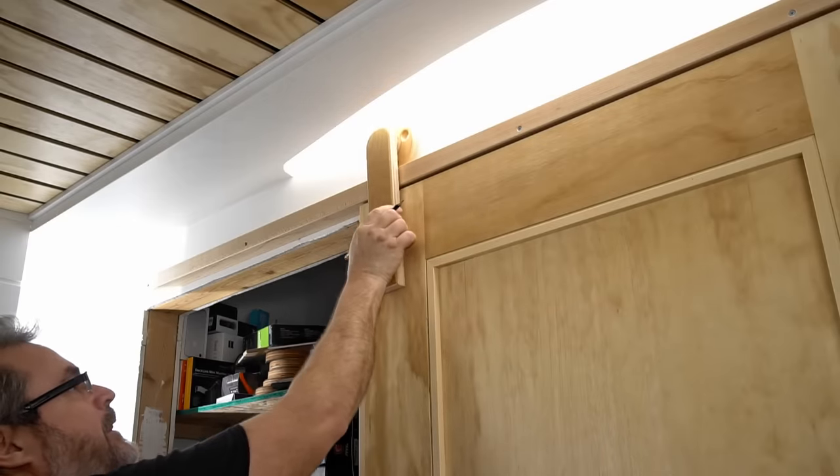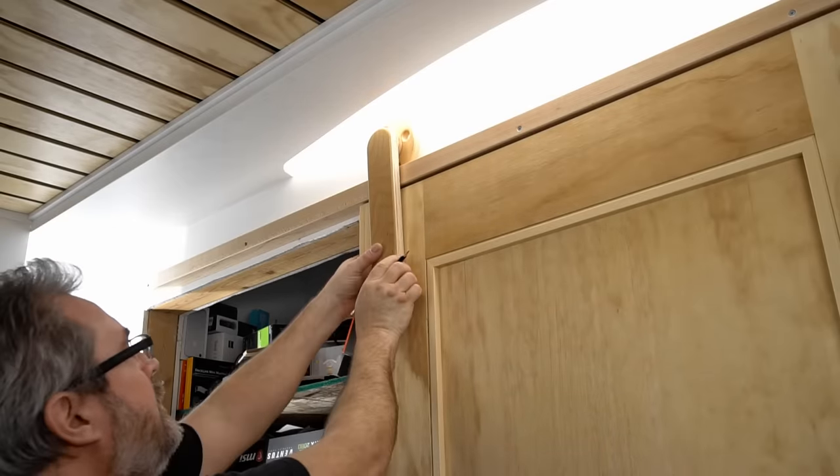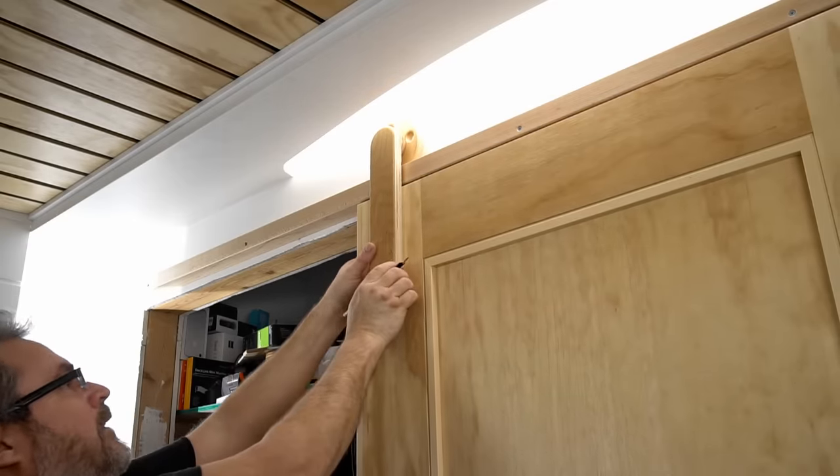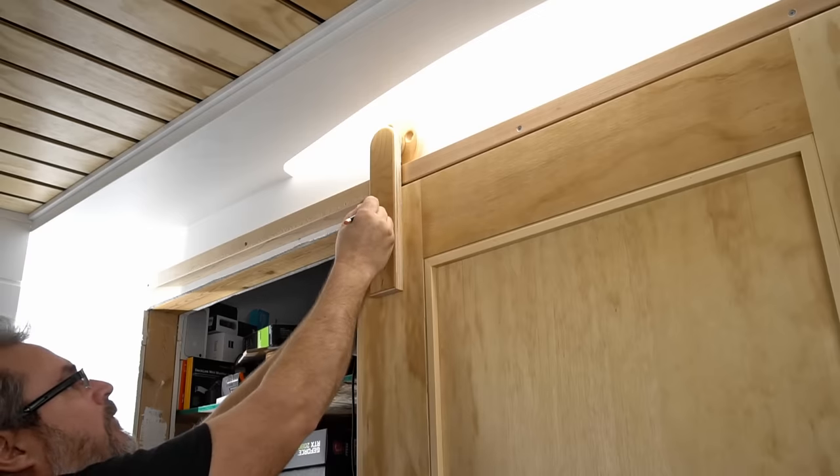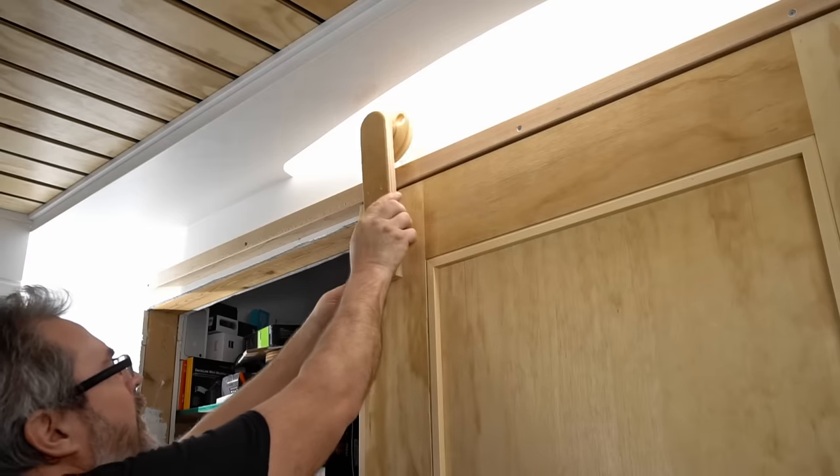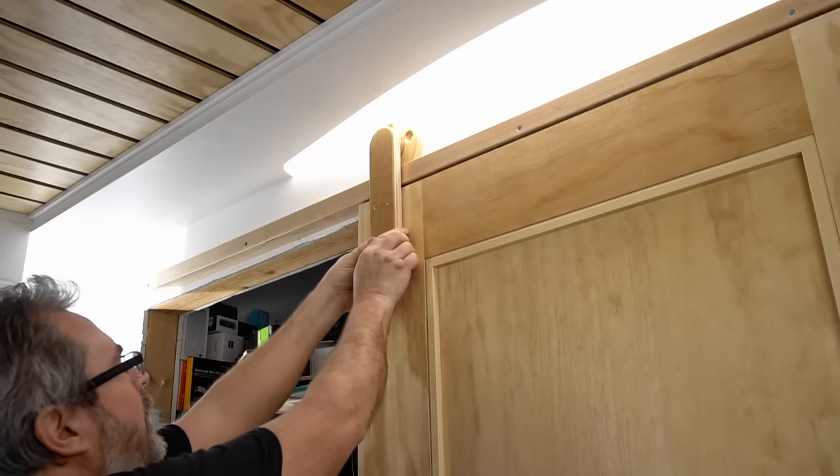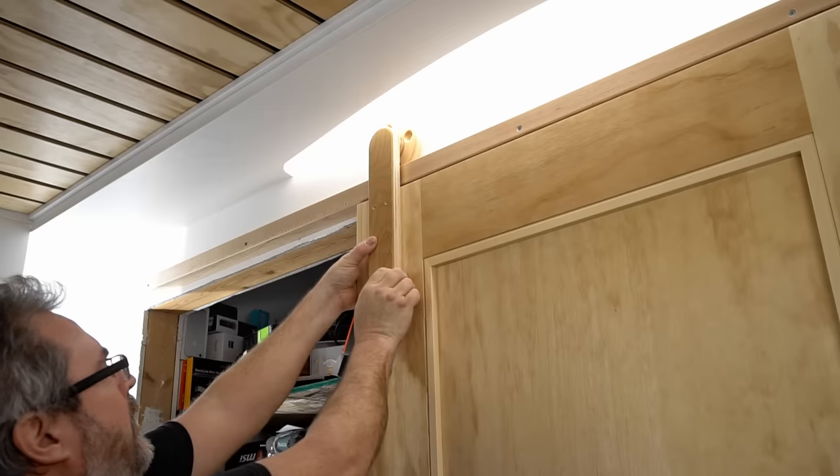So the track is installed. Now I can bring the door back over and set it back up on those shims on the bottom, and make sure that it's level again. And then I can put one of the hangers up to mark the locations for the screws that I'll use to mount this.